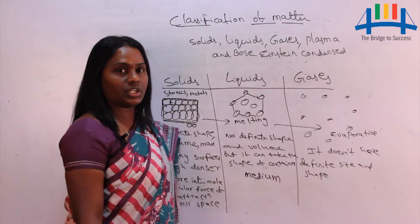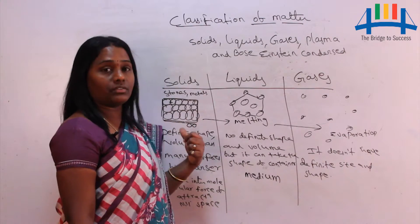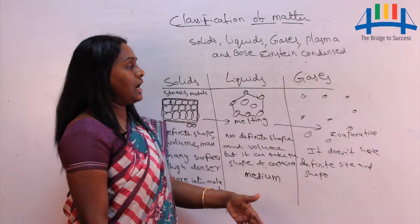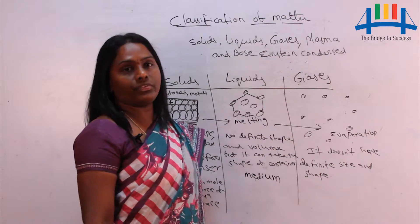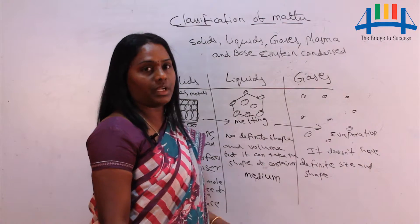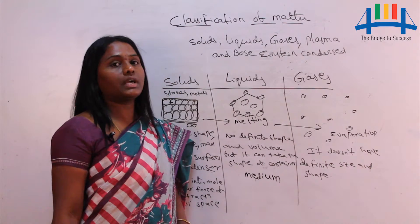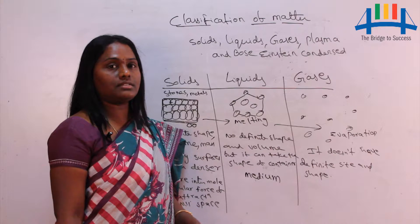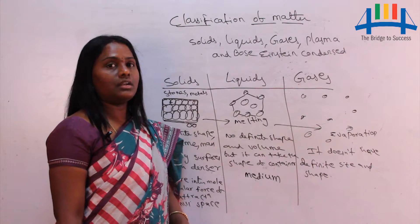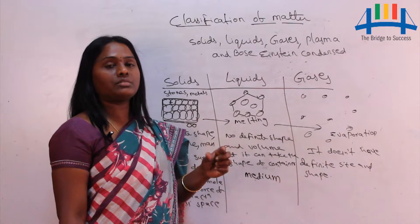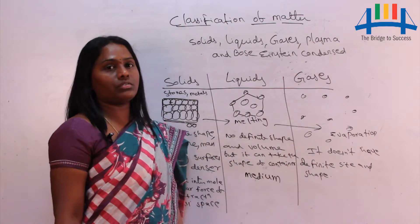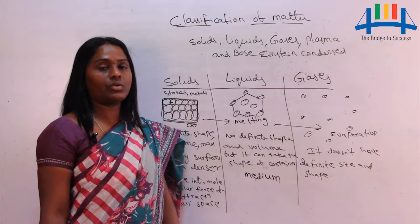Gases have a property called diffusion. Solids cannot flow, but gases can flow. Diffusion means the spreading out of a gas — spreading of a gas through a small hole on applying a small pressure is called diffusion. This is called the diffusion property of gases.